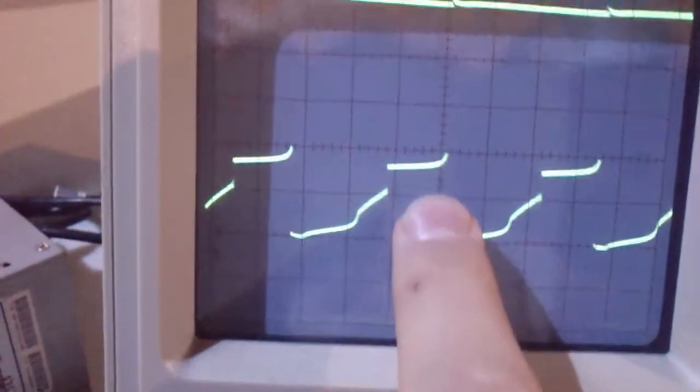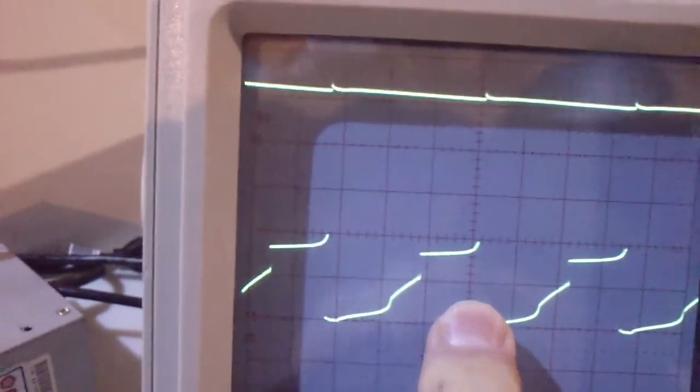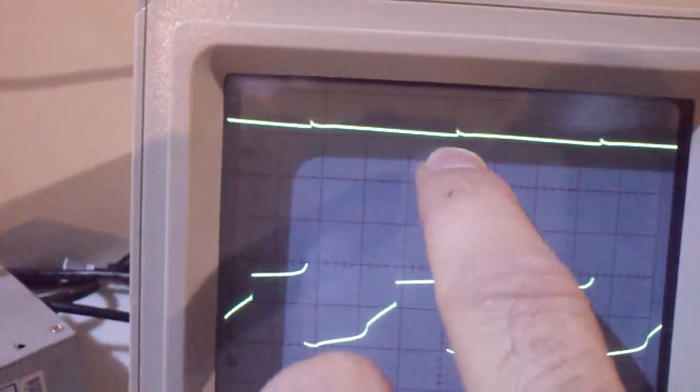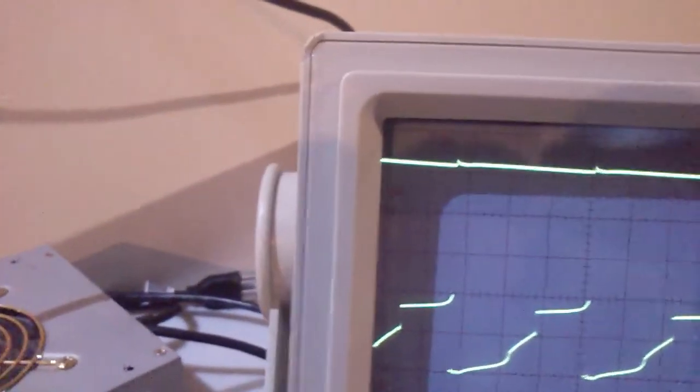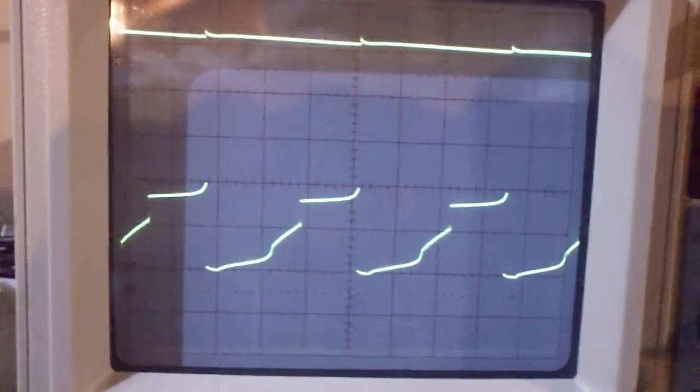This, the first line is set on 0.5V, 500 millivolts per division. And this one is set for 200 millivolts per division. And both of my probes are at 1x1.